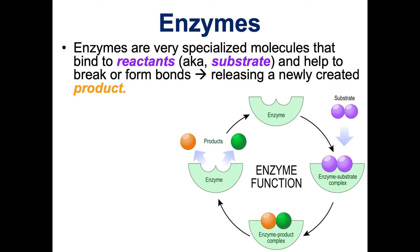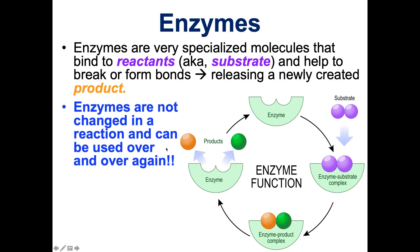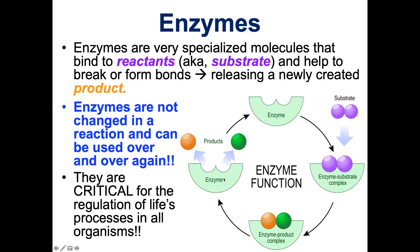Enzymes are very specialized molecules. They bind to reactants — the substrate — and help to break or form bonds, facilitating these reactions, then release the newly created product. Enzymes are not changed and can be used over and over again, just like an electric mixer. We can see in this picture: we have an enzyme, substrate attaches and binds, the chemical reaction is facilitated by the enzyme, and then the enzyme releases the products. The enzyme is not changed — that's really important. These enzymes are so critical for regulating life's processes, either allowing things to happen or preventing things from happening.